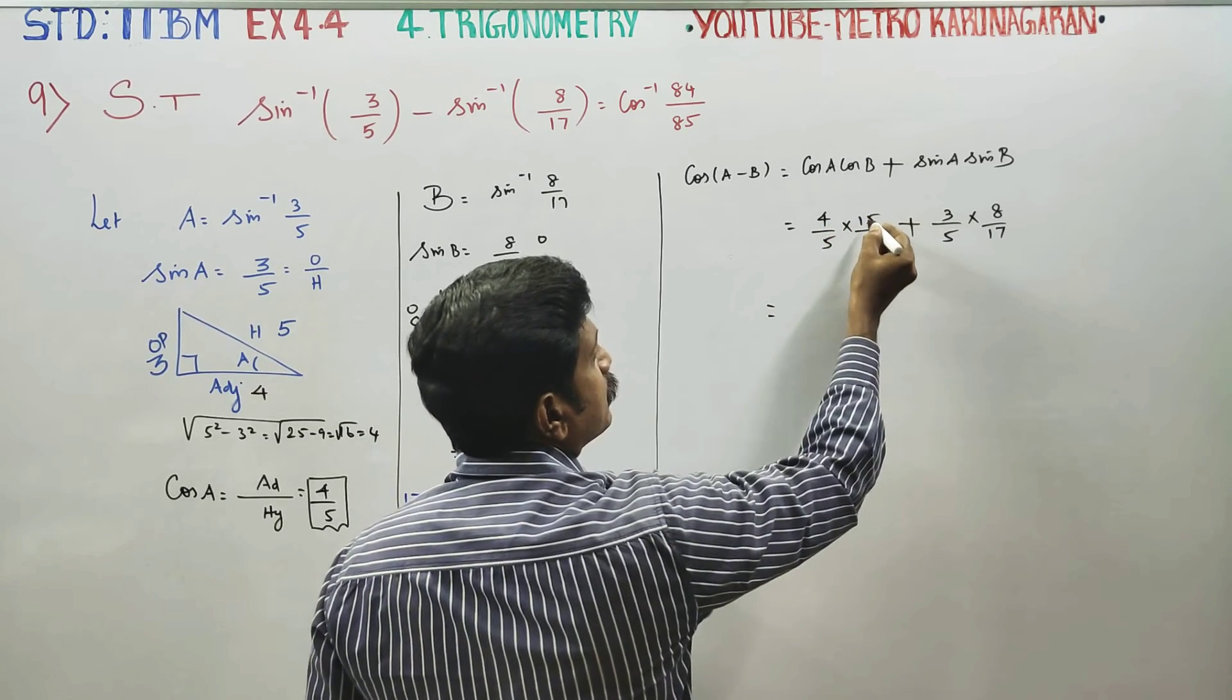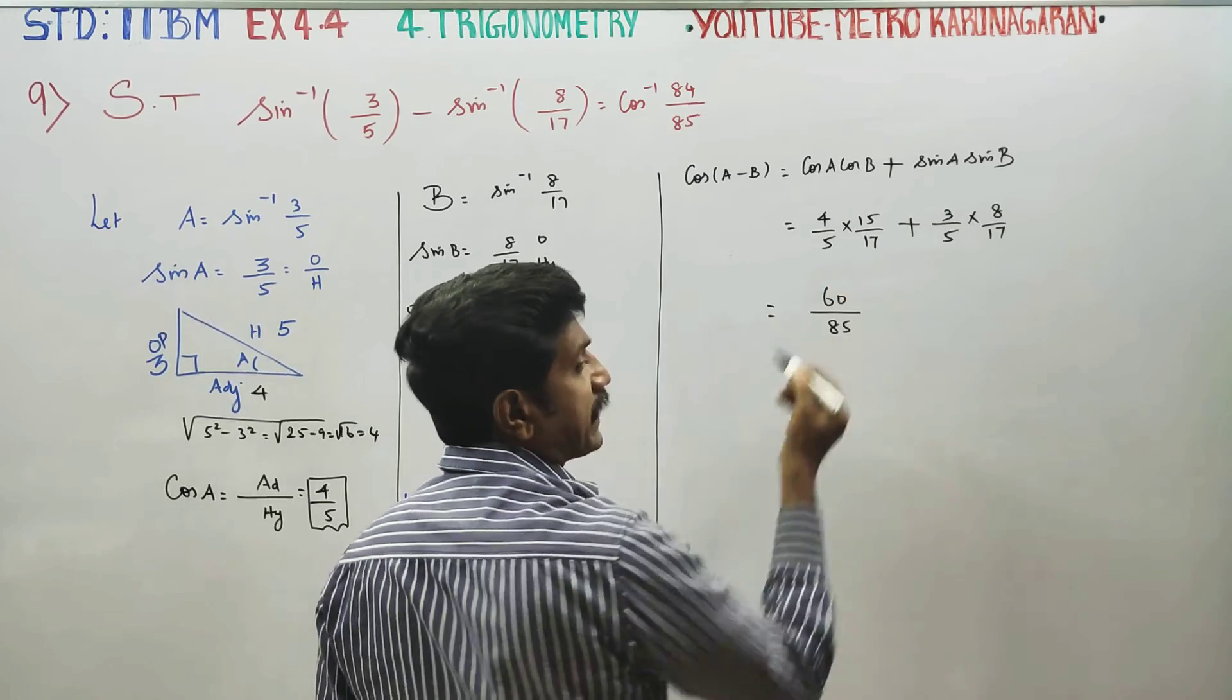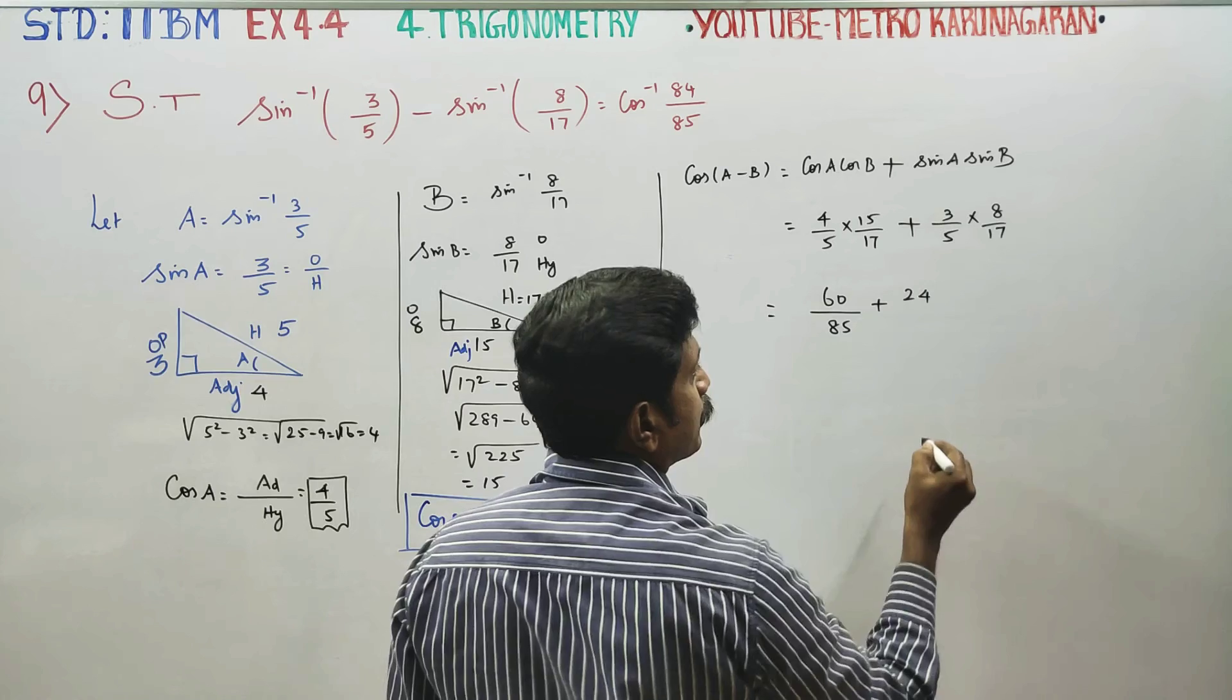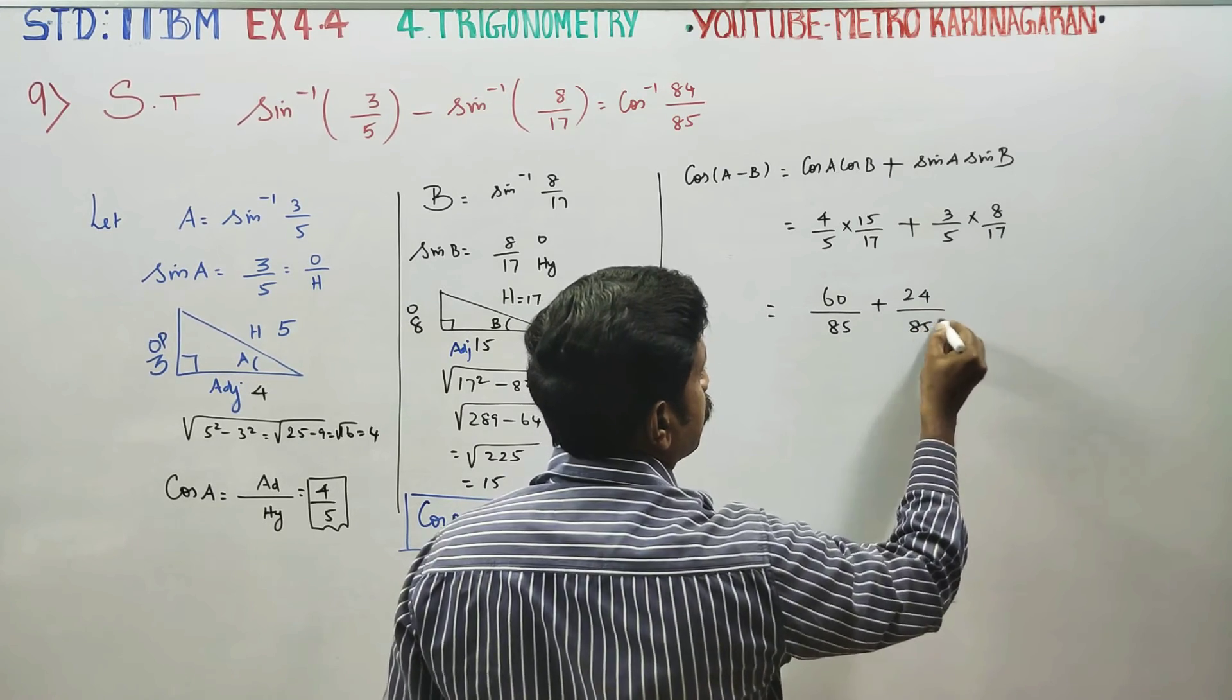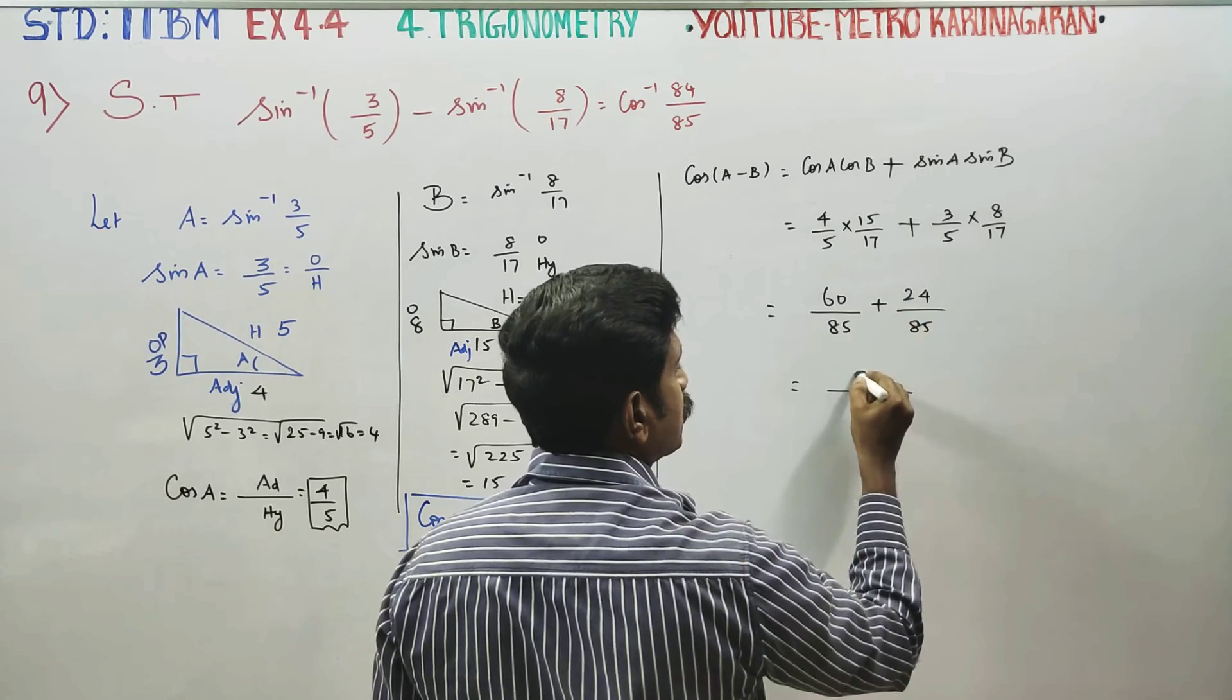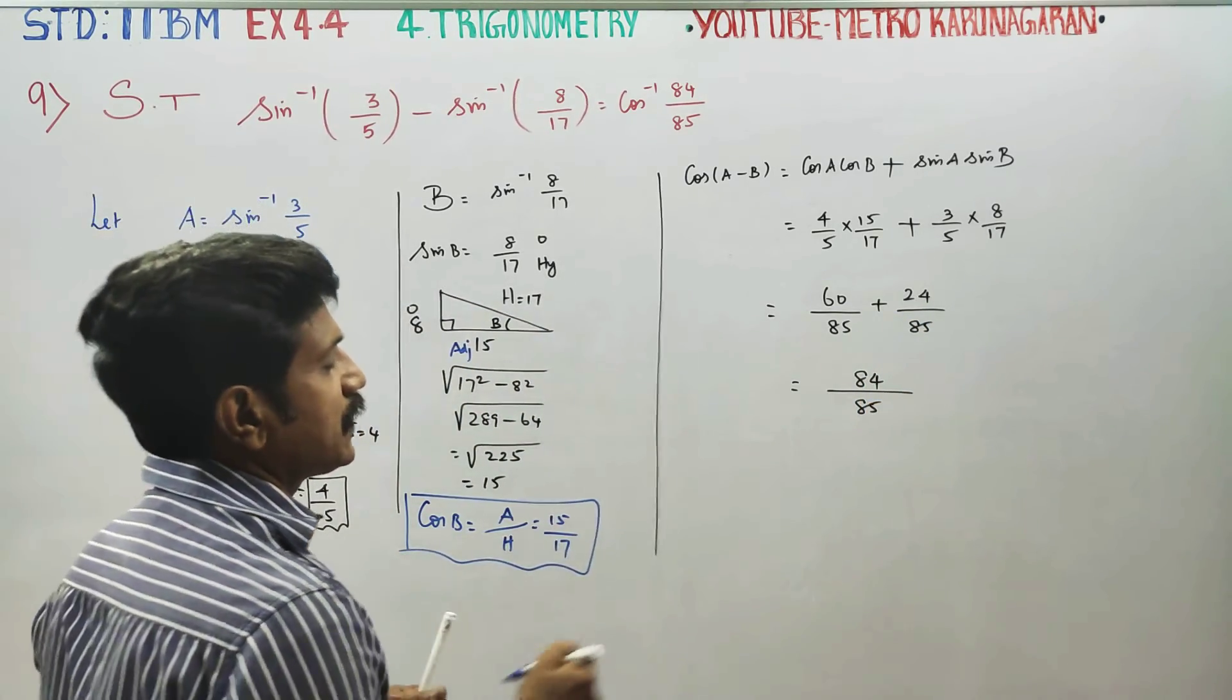4 times 15 is 60. 3 times 8 is 24. LCM is 85. This gives us 84. 84 by 85. This is your answer.